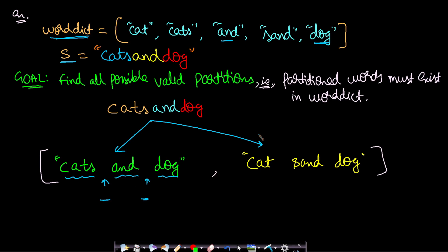We can form another sentence as well. If we partition between t and s, and then between the two d's, we form 'cats and dog' — and these are all spaces. Each word can be reused multiple times; in this case we don't need multiple instances, so it's fine.